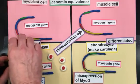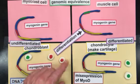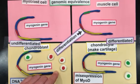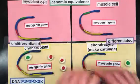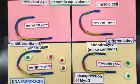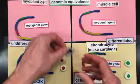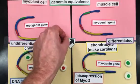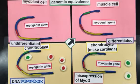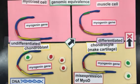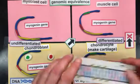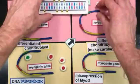When they did, no MyoGenin was made. So to emphasize: when we misexpress MyoD in a chondroblast, we can make muscles — but when we misexpress MyoD in a chondrocyte, we failed to make muscles. What's going on? What's going on is thought to be, in part, patterns of DNA methylation.